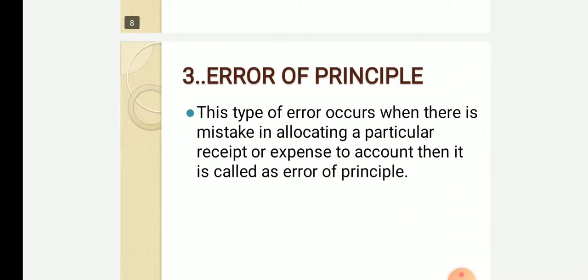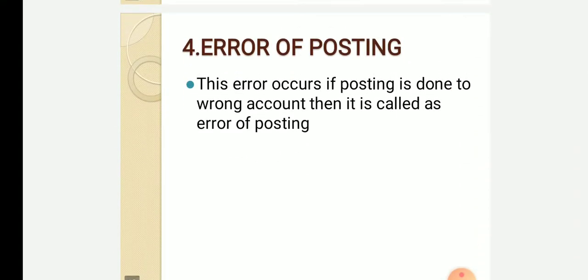Error of principle is done when, for example, you purchase machinery but you cannot correctly add the bill of that machinery to the right account. That error is called error of principle. Error of posting means the error occurs if posting is done to the wrong account — if you have sent money to the wrong account, that is called error of posting.